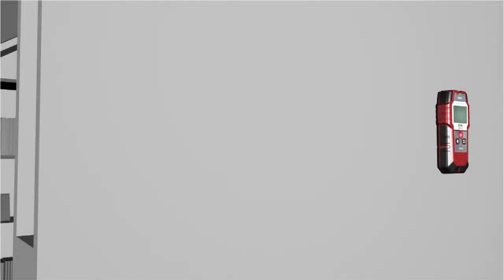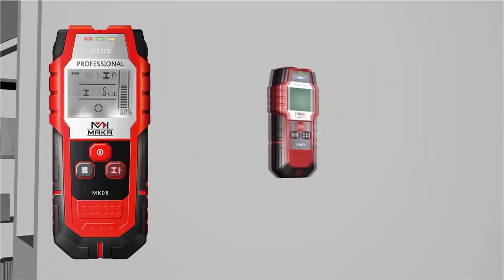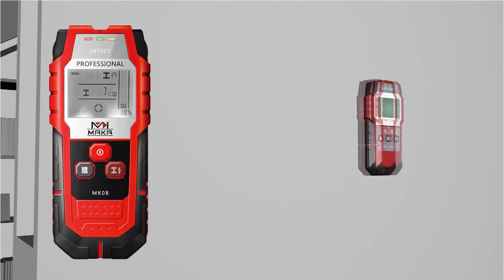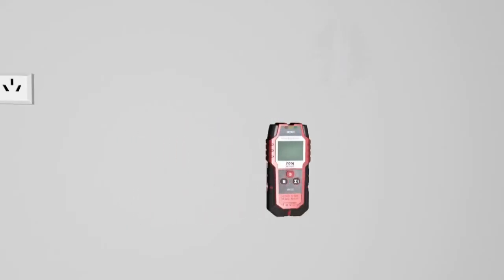When detecting metal articles, press metal detection button to enter into metal detecting state. Then the screen will display a design of detecting metal in B and the green indication light will be on.